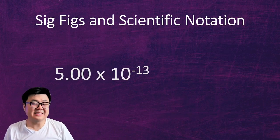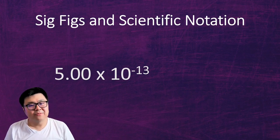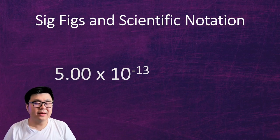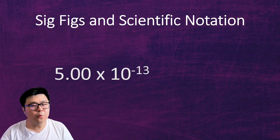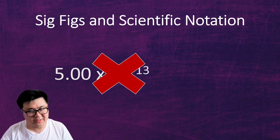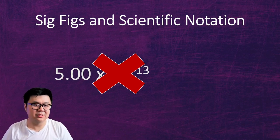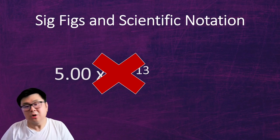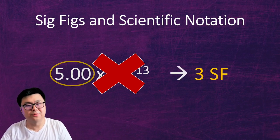This is a number written in scientific notation — we're going to cover this in just a few minutes. But for now, let's see how sig figs apply to scientific notation. When it comes to scientific notation, there's always going to be a times 10 to the power of something. We never look at that part for sig figs. We only look at the number in front of the multiplication — here we see 5.00. So we do what we normally do for sig figs, and this should be three sig figs.